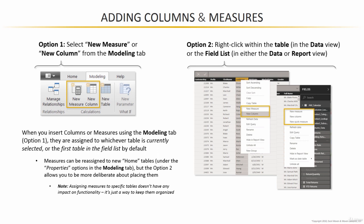If you accidentally insert a measure from the modeling tab and it gets placed or assigned to the wrong table, not a big deal at all. You can easily reassign those measures or columns to new home tables using the properties options within the modeling tab. But going with option two — actually right clicking within the table or the field list — lets you be a little bit more deliberate about placing them. So that's the approach I'm going to use and that I would recommend you use as well.